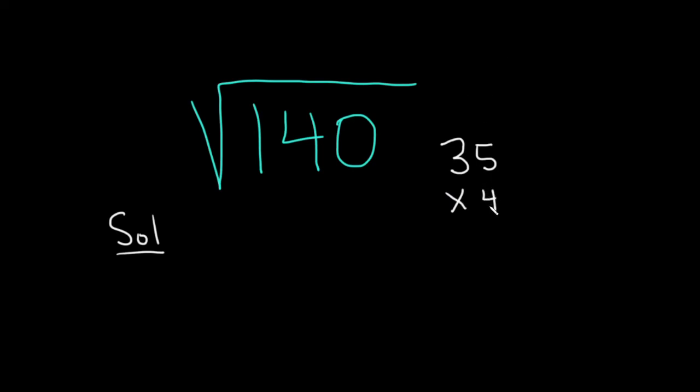The way I came up with that is 4 times 30 is 120, 4 times 5 is 20, you add them and you get 140. Let's double check. 4 times 5 is 20, you carry the 2. 4 times 3 is 12, and you add 2 more, so you get 140.